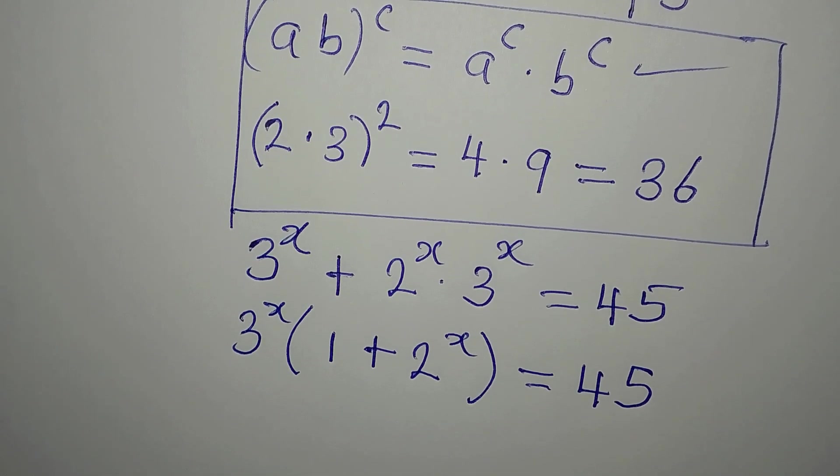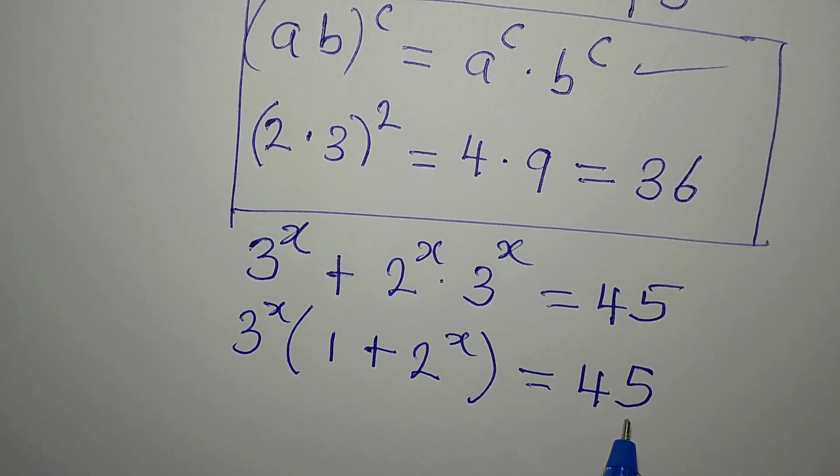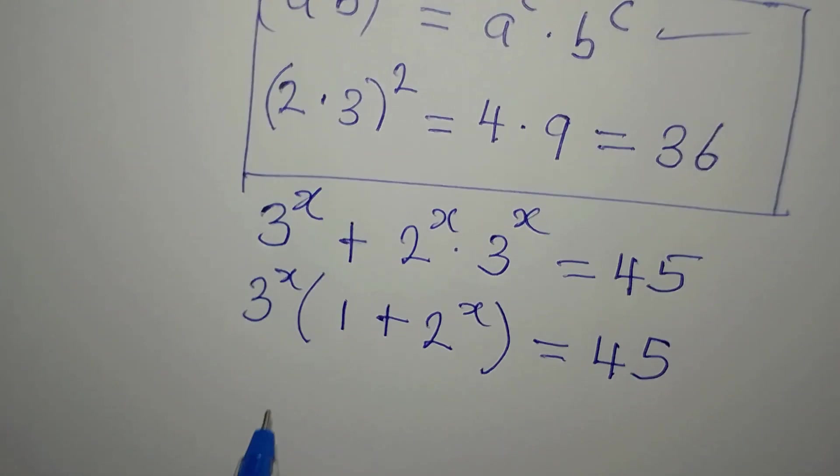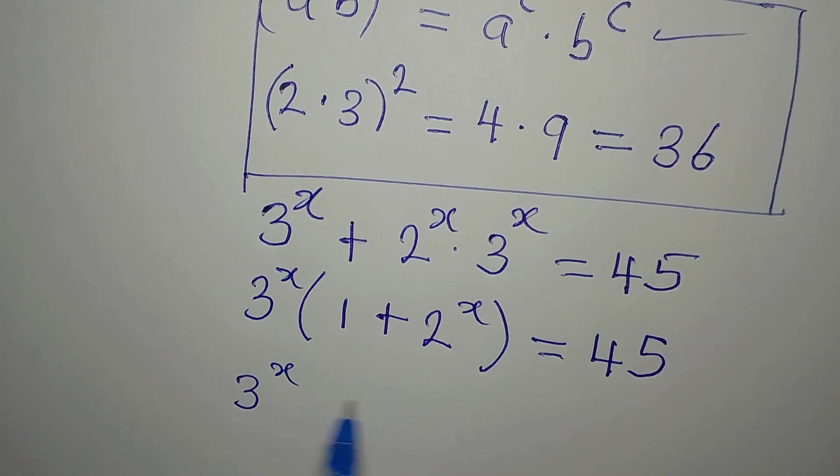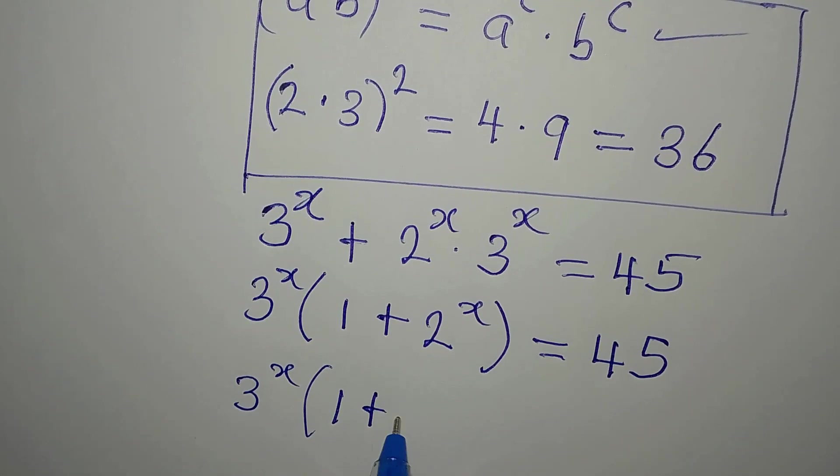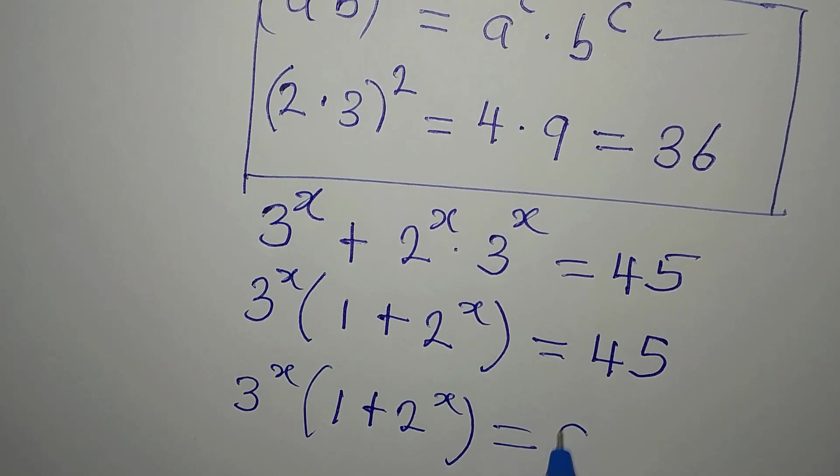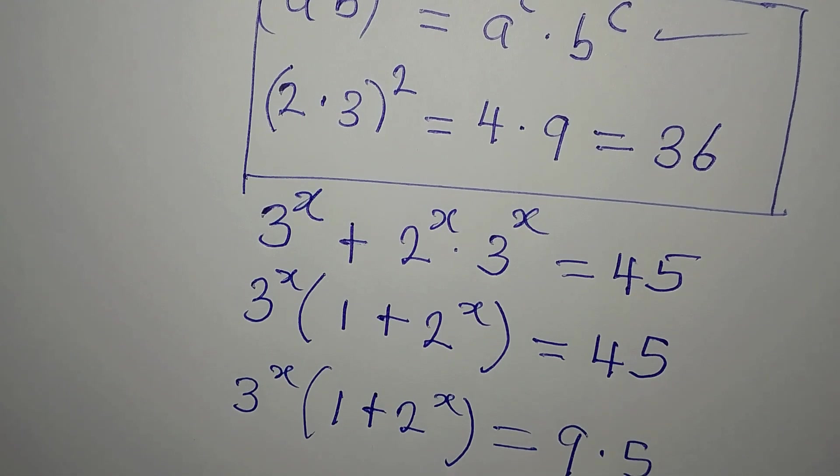Now, for us to be able to solve this, we are going to work on what we have on the other side. So we have 3 to the power of x into 1 plus 2 to the power of x equals, 45 is 9 times 5.